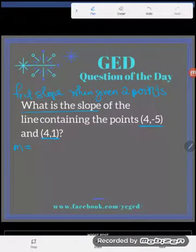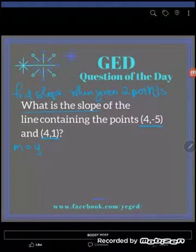It says M, that's the letter we use for slope, is equal to Y2 minus Y1, the difference of the Y values, over X2 minus X1, the difference of the X values.